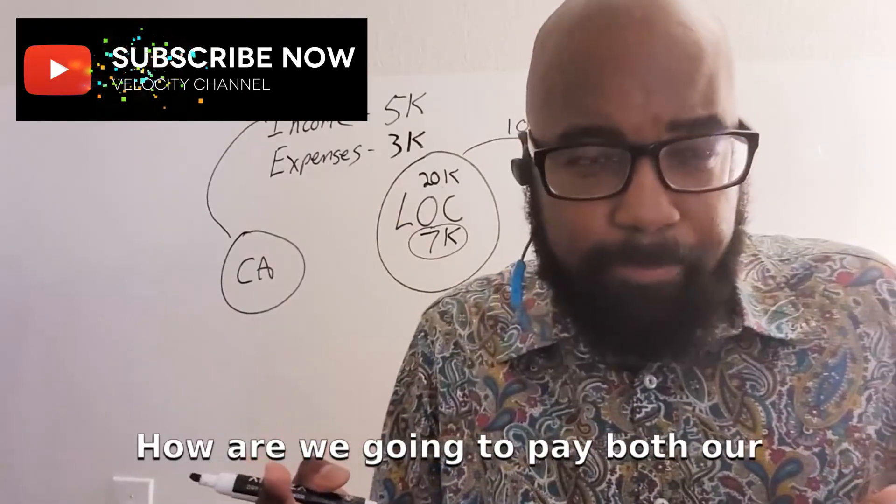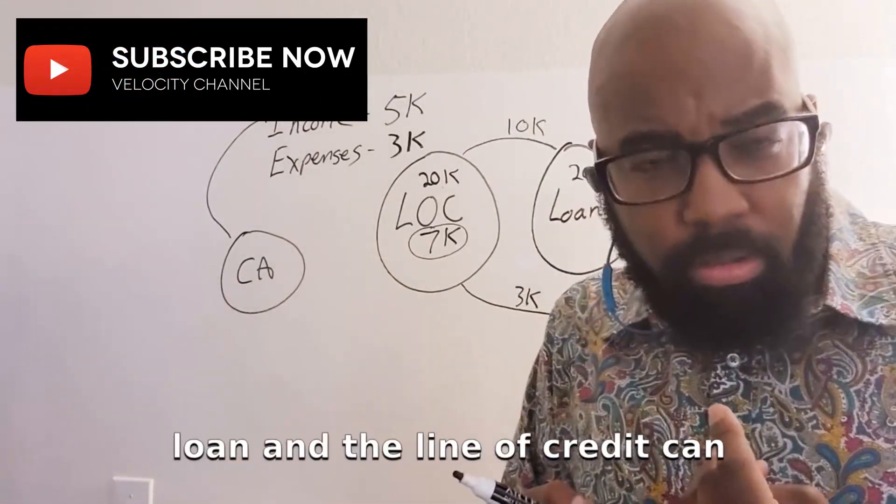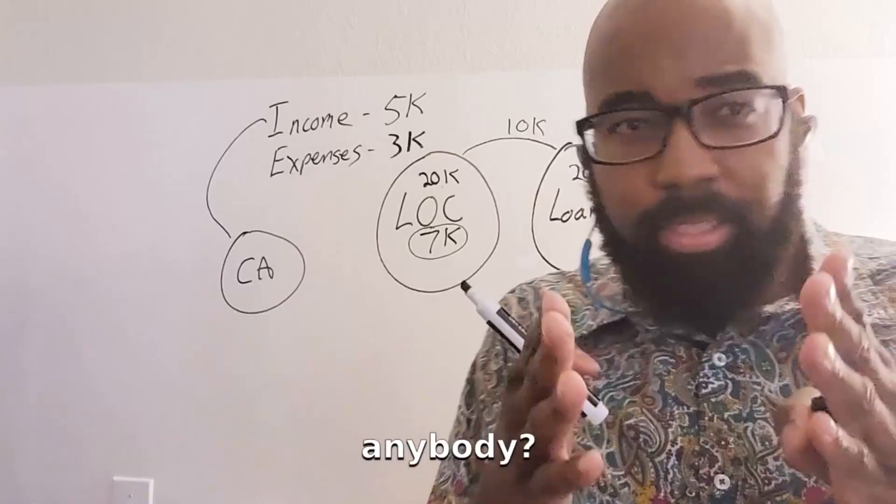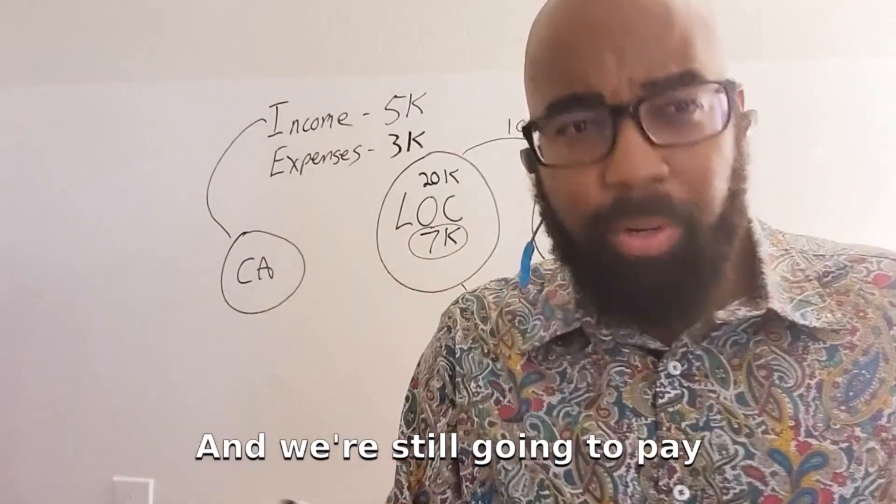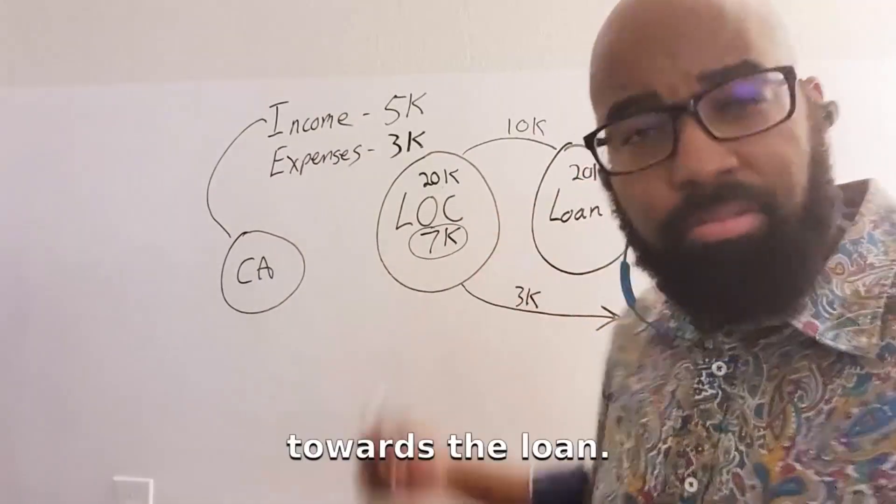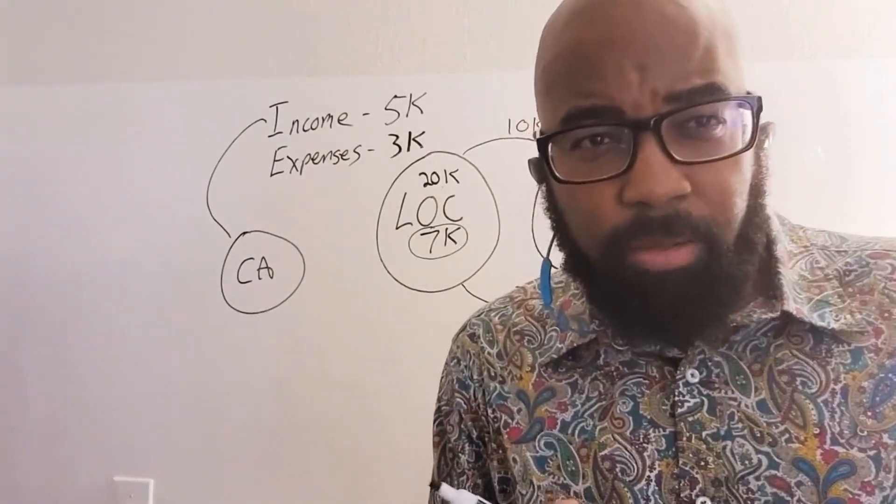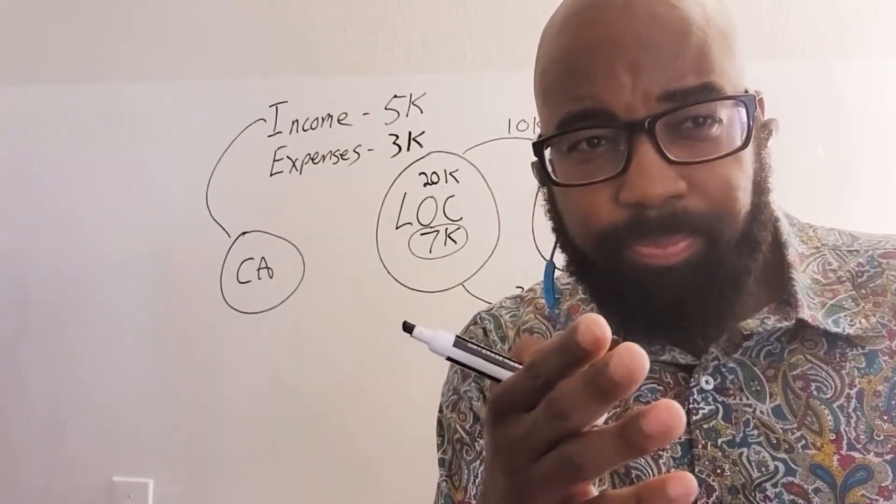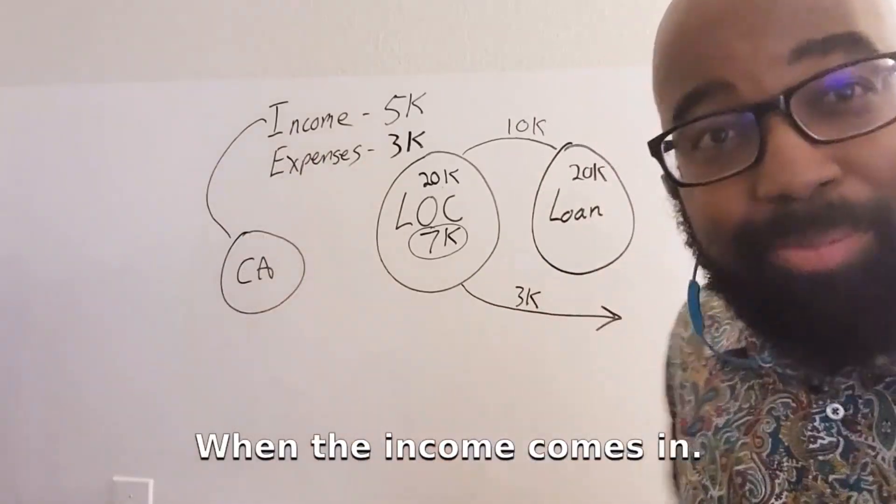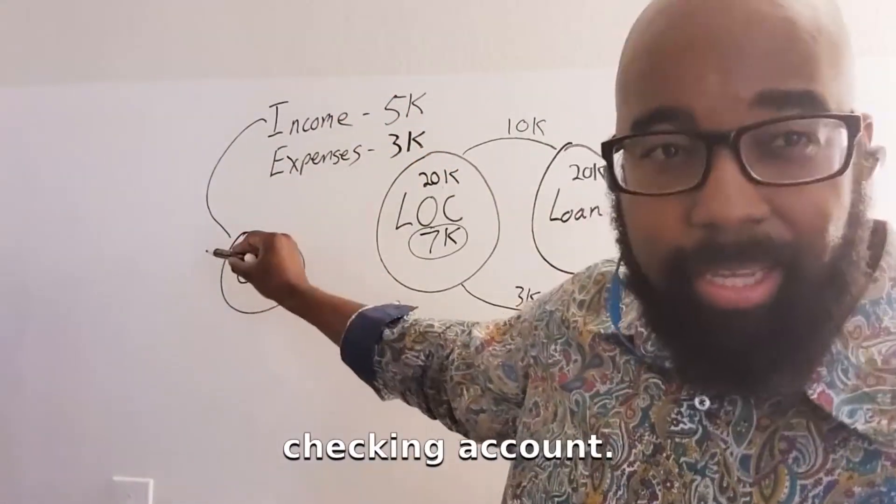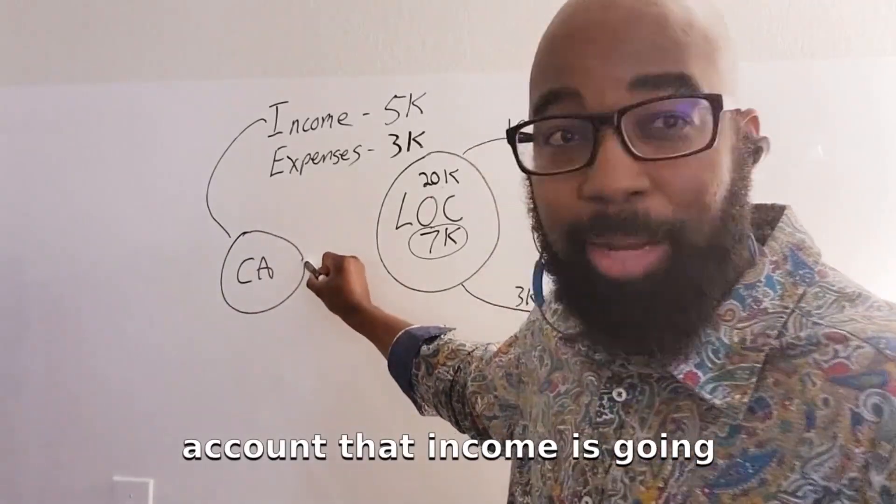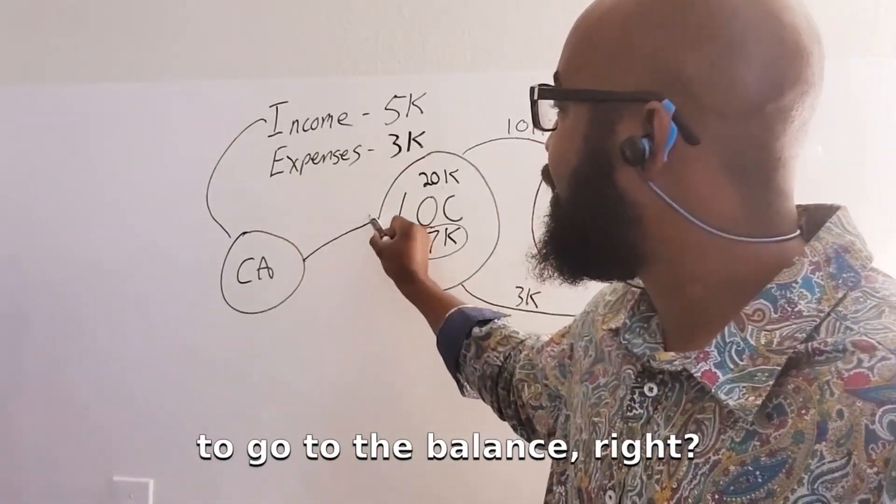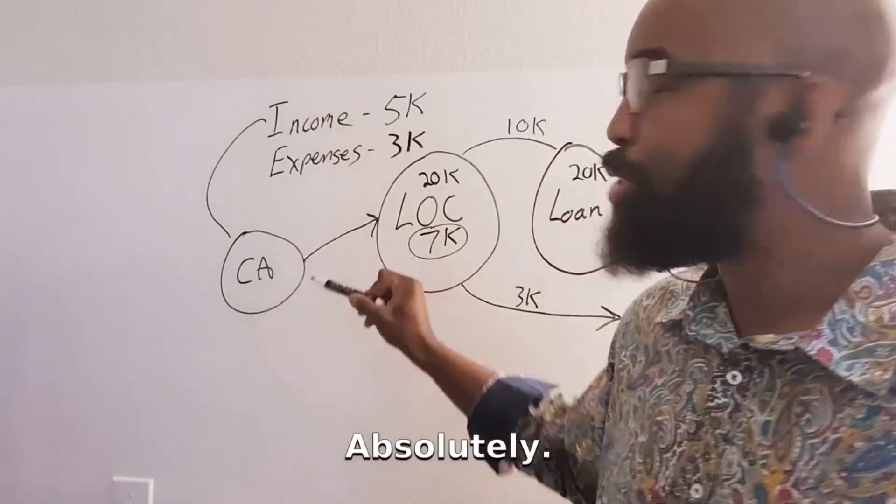How are we going to pay both our loan and the line of credit? Can anybody guess? Absolutely. And we're still going to pay our monthly obligation towards the loan. How are we going to do that, though? That's right. When the income comes in, it's going to go inside of the checking account. And then from the checking account, that income is going to go to the balance, right? Absolutely.